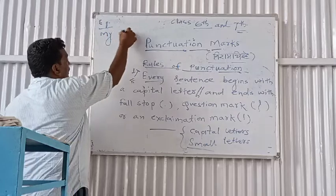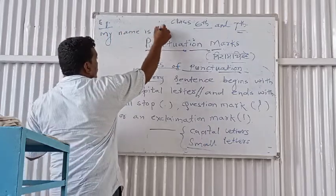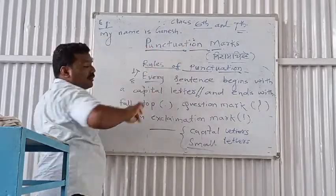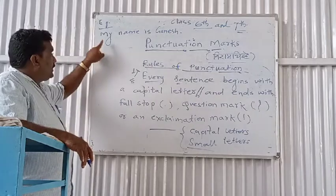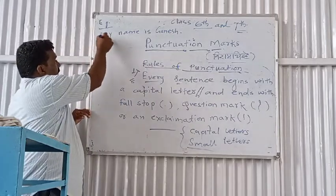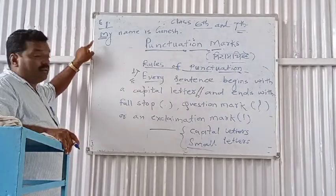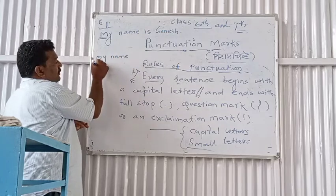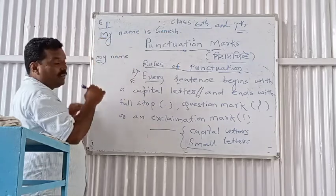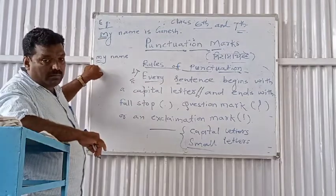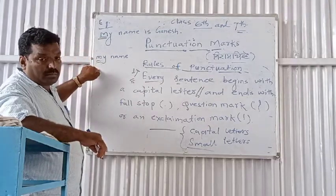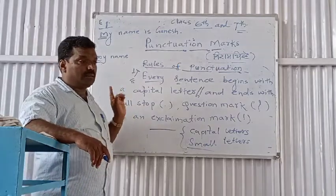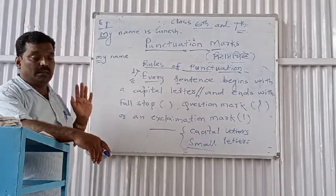For example: 'My name is...' This sentence begins with 'M'. If you write this sentence, 'My' with a capital M is correct, but writing 'my' with a small m is wrong. You cannot write the first letter of any sentence as a small letter.